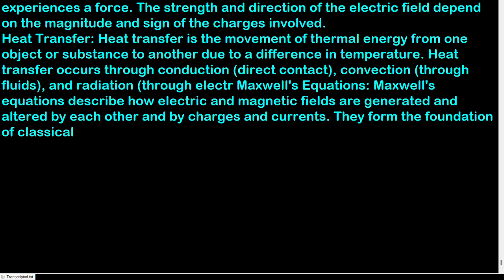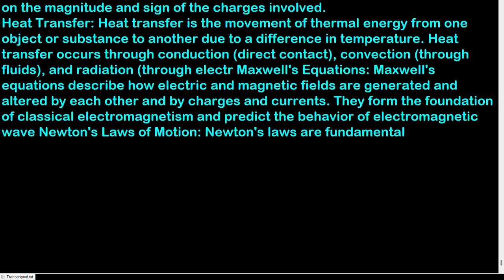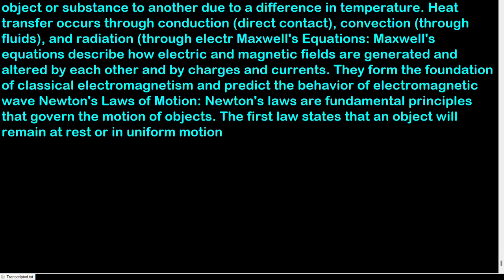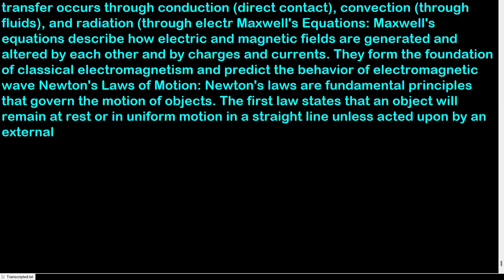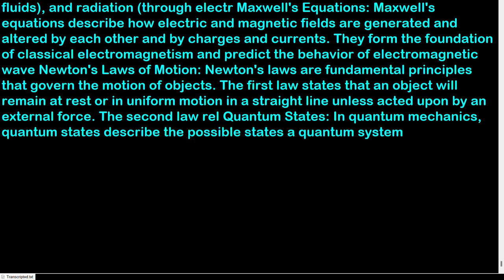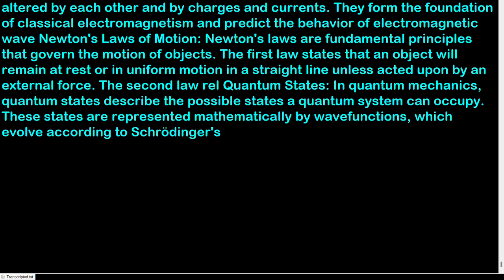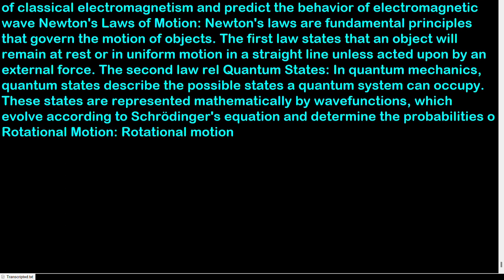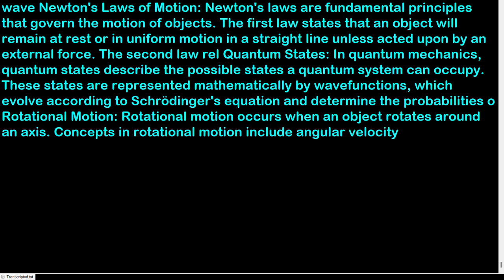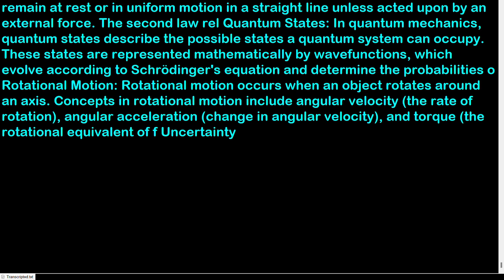Maxwell's equations describe how electric and magnetic fields are generated and altered by each other and by charges and currents. They form the foundation of classical electromagnetism and predict the behavior of electromagnetic waves. Newton's laws of motion: the first law states that an object will remain at rest or in uniform motion in a straight line unless acted upon by an external force. Quantum states: in quantum mechanics, quantum states describe the possible states a quantum system can occupy. These states are represented mathematically by wave functions, which evolve according to Schrödinger's equation. Rotational motion occurs when an object rotates around an axis. Concepts include angular velocity (the rate of rotation), angular acceleration (change in angular velocity), and torque (the rotational equivalent of force).